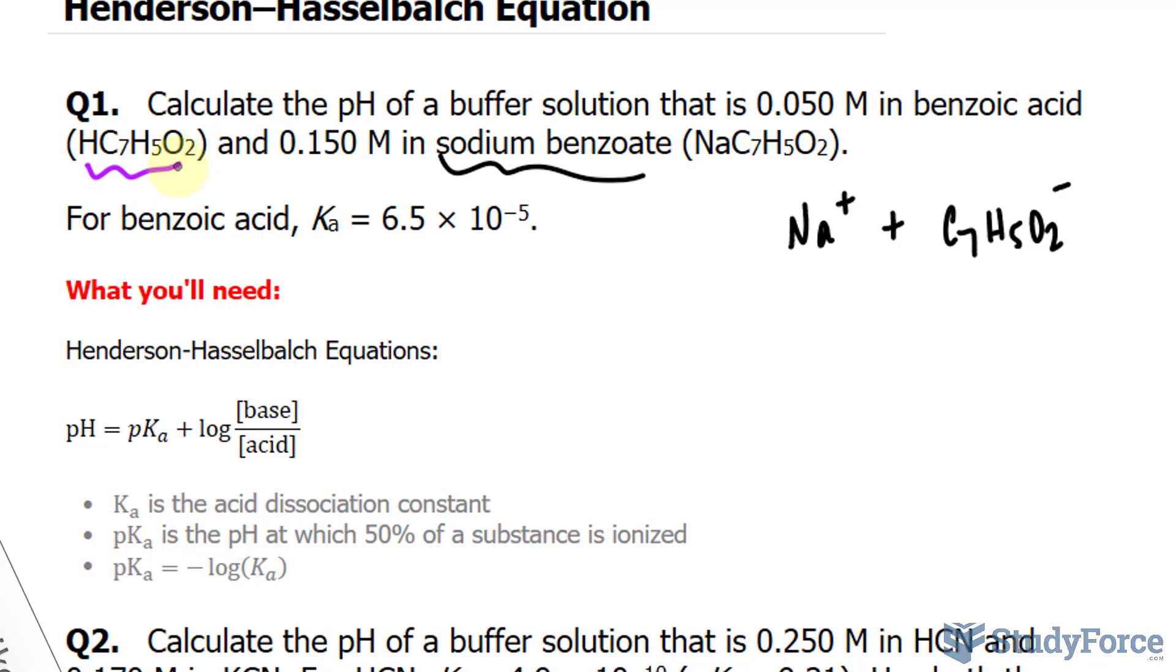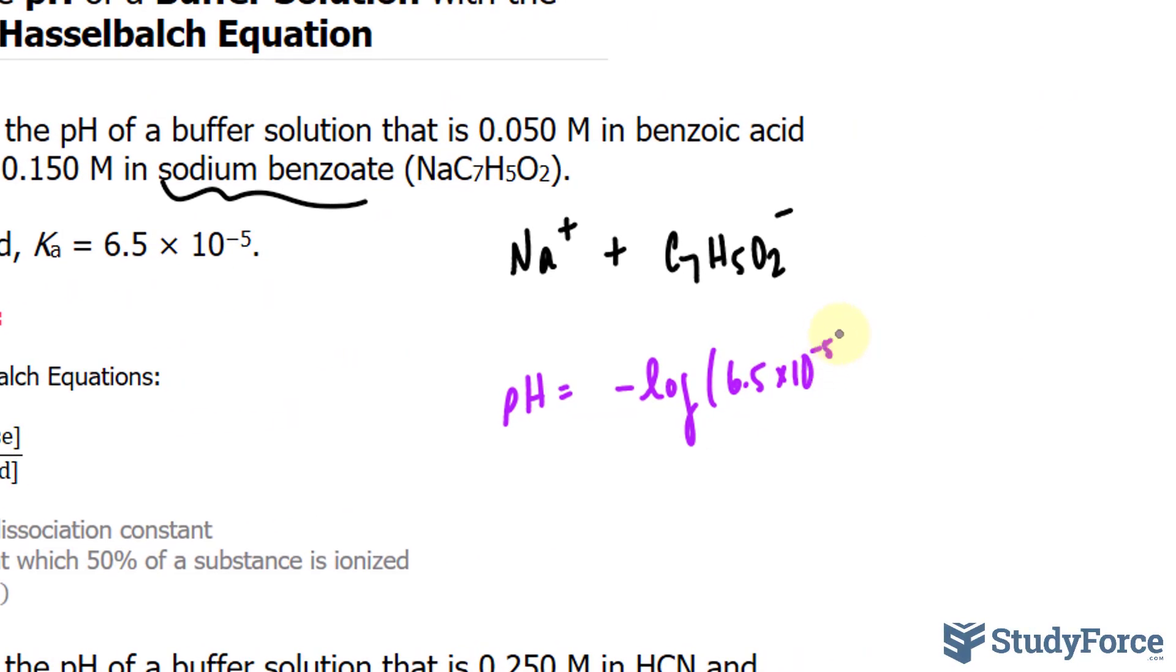We have all the information we need to substitute into this formula. pH is equal to pKa, and that's negative log of the acid dissociation constant, 6.5 times 10 to the power of negative 5, plus log of the concentration of our base, 0.150.